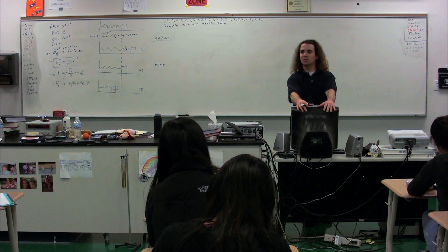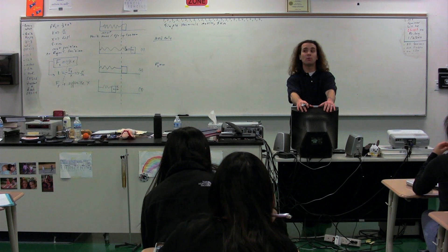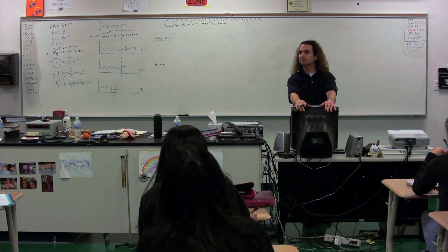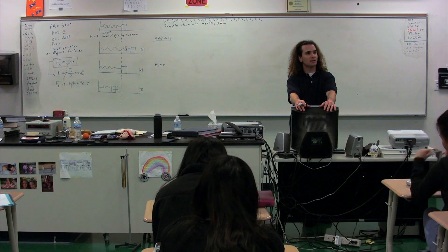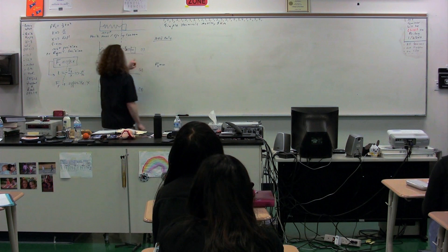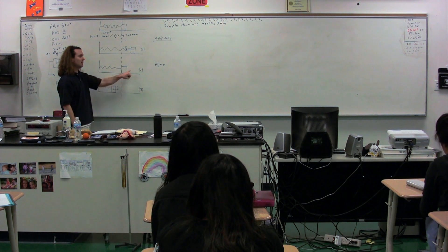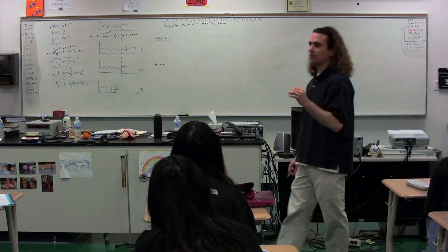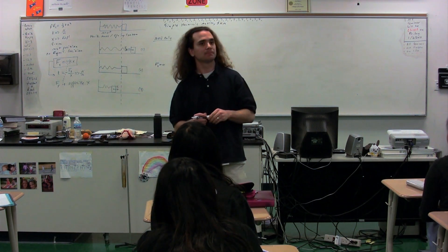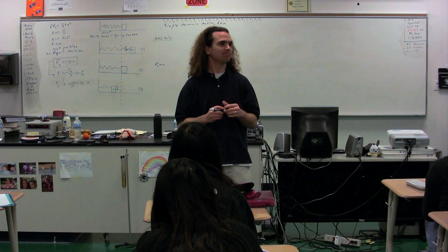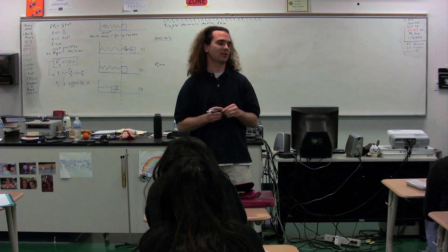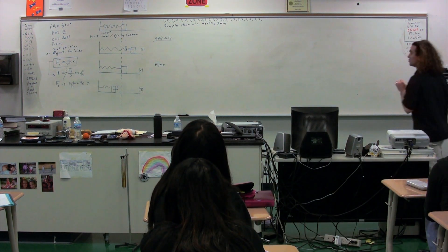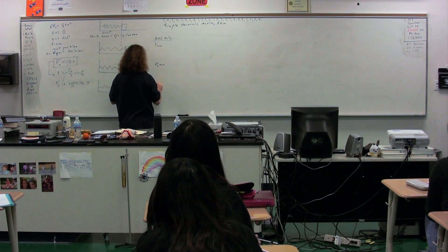We should be able to identify the magnitude of the force exerted by the spring, the acceleration of the mass, and the velocity of the mass. We've already identified the force of the spring as zero at position two. Therefore, what do we know about the magnitude of the force of the spring at positions one and three? They will be equal in magnitude — and not only equal, but also at a maximum. The magnitude of the force of the spring is at a maximum at positions one and three.